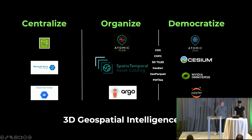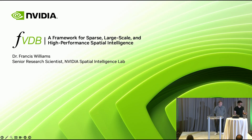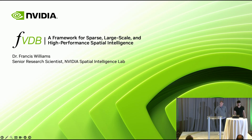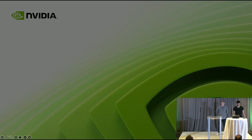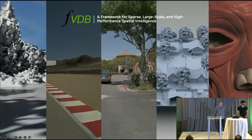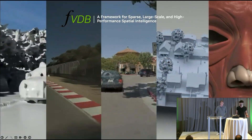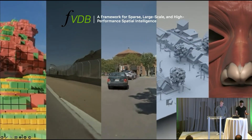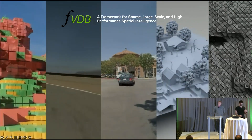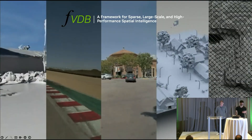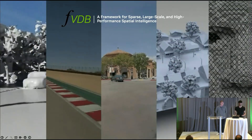Thanks, James. I'm going to talk about FVDB, which is a currently early-access library for doing Spatial Intelligence, and will hopefully be released in September under the Apache V2 license, so easy to use for everyone. When I talk about FVDB, I usually like to start by saying something kind of patently obvious, especially to this crowd: Spatial Data is everywhere around us. We use it in maps, digital twins, robotics, physics simulation, and so on.